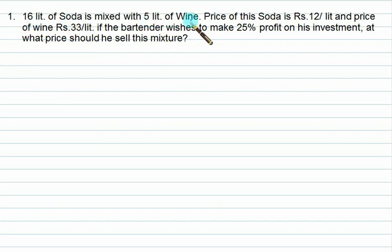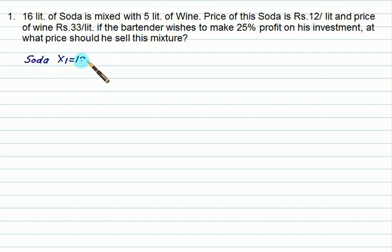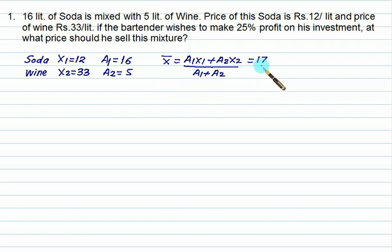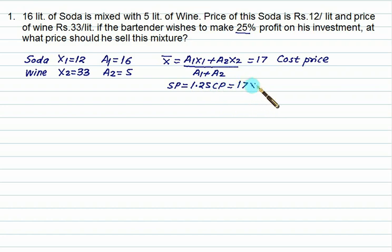16 liters of soda is mixed with 5 liters of wine. Price of soda is 12 and price of wine is 33. The bartender wants 25% profit on his investment. What price should he sell the mixture? Mean price equals a1·x1 plus a2·x2 divided by a1 plus a2, which gives 17. This is his cost price. Selling price must be 25% higher: 17 times 1.25 equals 21.25.